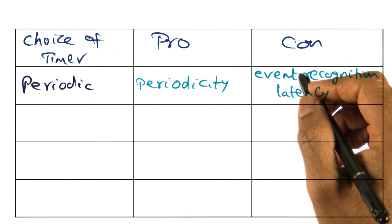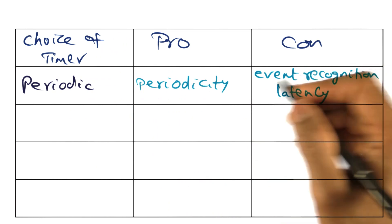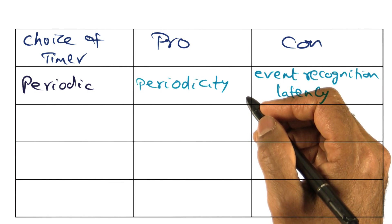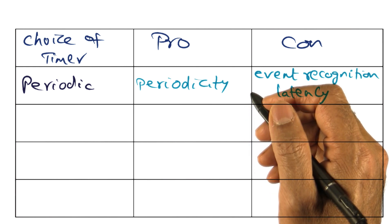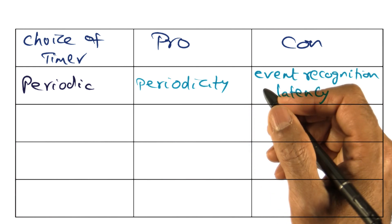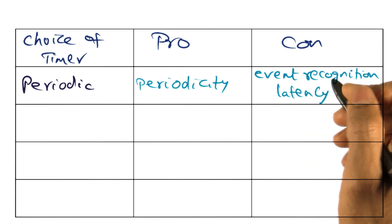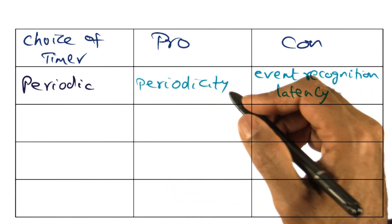And the maximum timer latency is equal to the period itself. So for instance, if the event happened just after a periodic interrupt, then the event will have to be delivered by the next periodic interrupt. So the worst case latency is going to be the periodicity of the periodic timer itself.